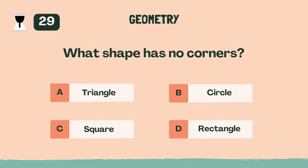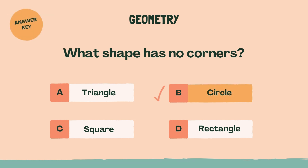What shape has no corners? The answer is B, circle.